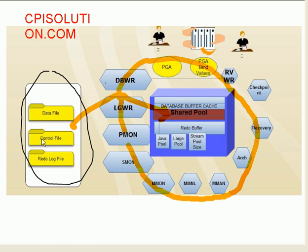The physical file structure comprises data files and the control file. The control file is a file which indicates the location of the data files, the redo log file, the last time you took a backup, and other important credential-related information. When you start a database, Oracle first checks the control file; if there is some problem, the database won't start — that is how important the control file is.